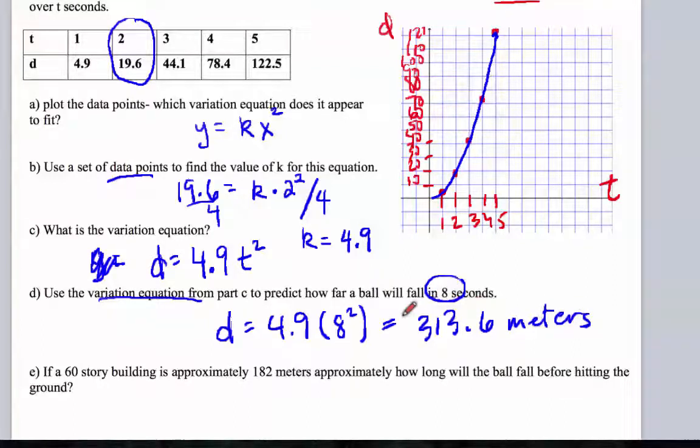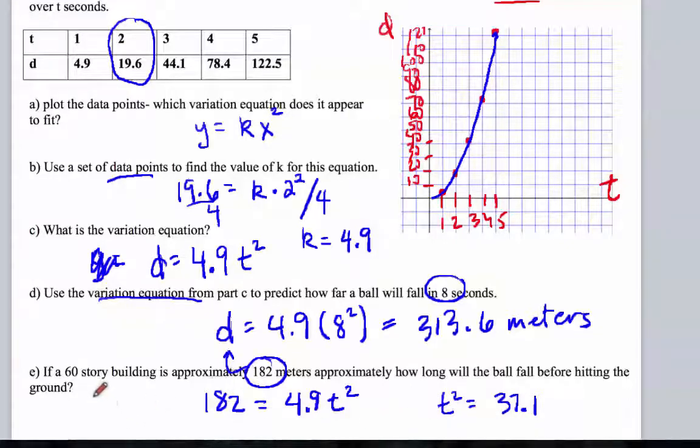All right, now finally we're asked to come up with how long a ball will fall before hitting the ground from 182 meters up. So for this problem, you're going to substitute 182 for your distance. Set that equal to your 4.9 times t squared, and now solve for t. Divide 4.9 off of both sides, t squared will then be equal to 37 and some change. You need to take the square root of both sides, and when you do that, you should get the time in seconds to be approximately 6 seconds.